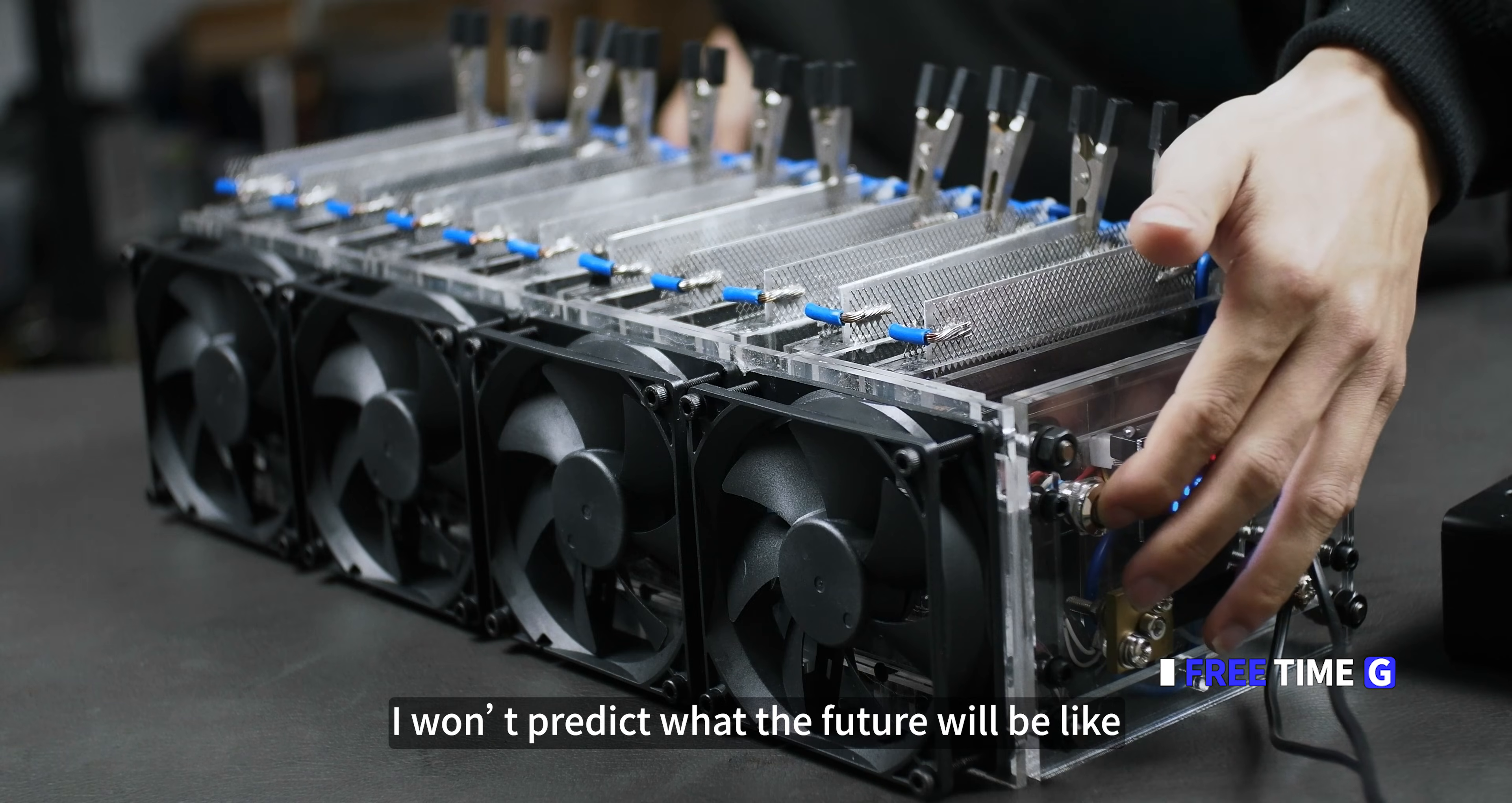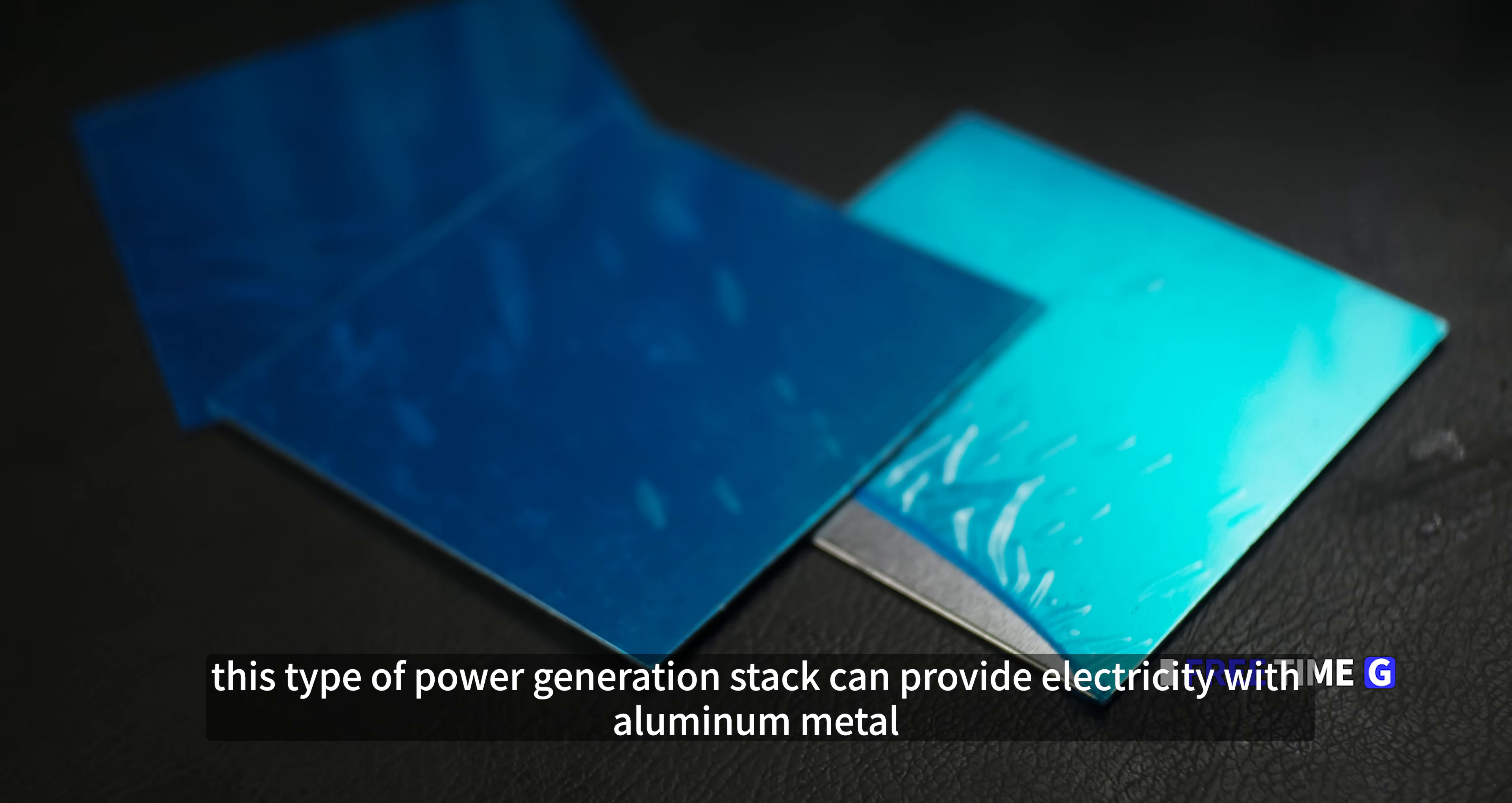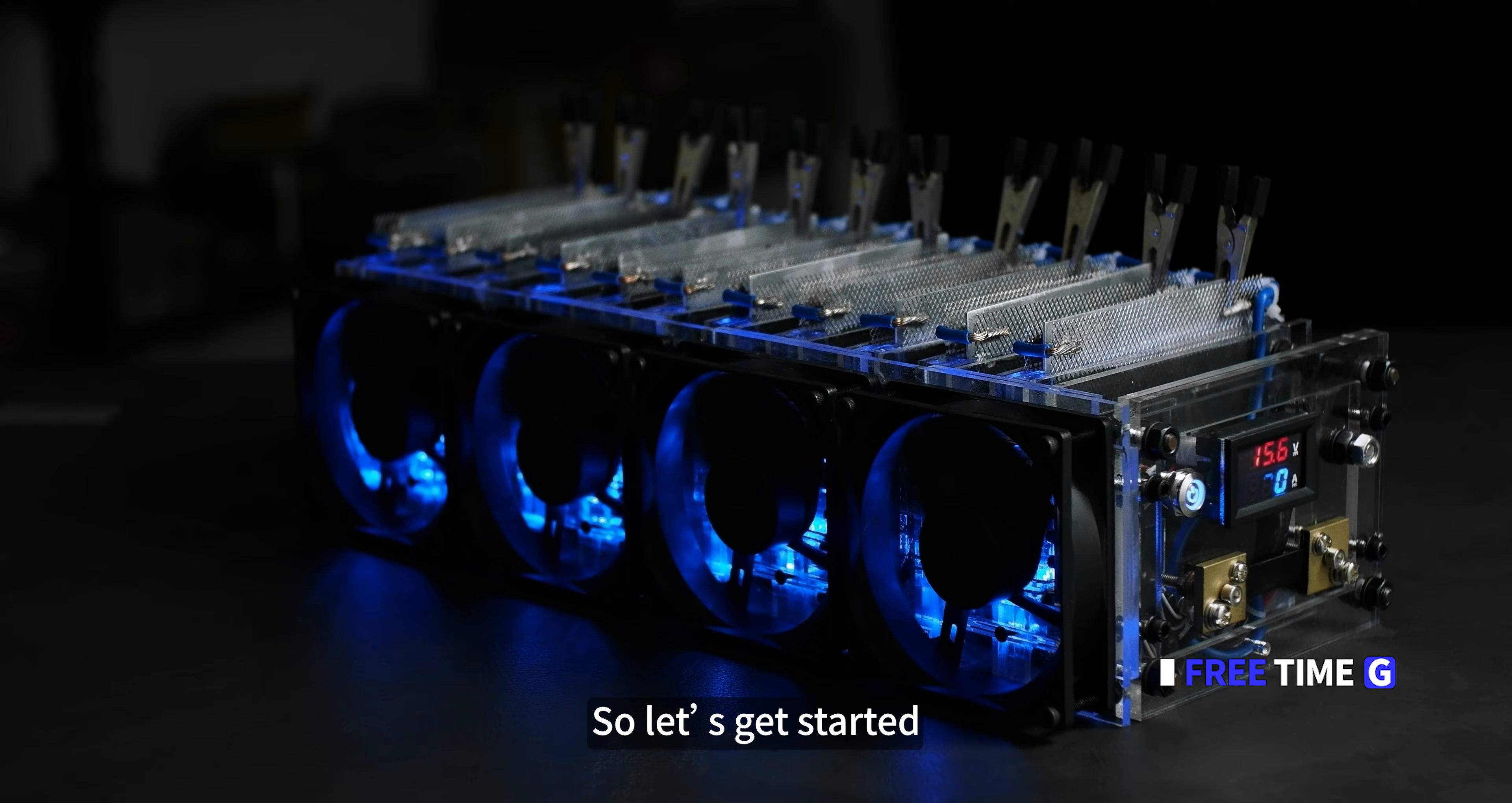I won't predict what the future will be like. Today I am just doing a tutorial on how to make an aluminum-air battery. This type of power generation stack can provide electricity with aluminum metal. It can provide us with electricity in emergency. The advantage is that it is very quiet. So, let's get started.